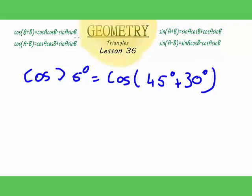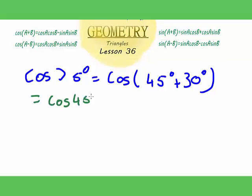So now using this formula here, we get this to be equal to cos 45 degrees multiplied by cos 30 degrees, minus sine 45 degrees multiplied by sine 30 degrees.